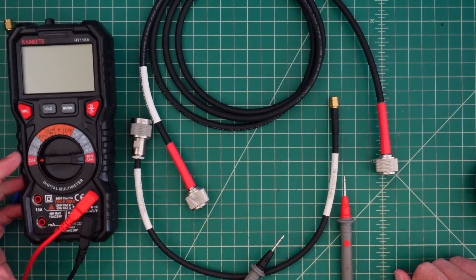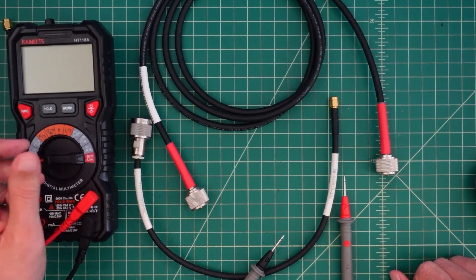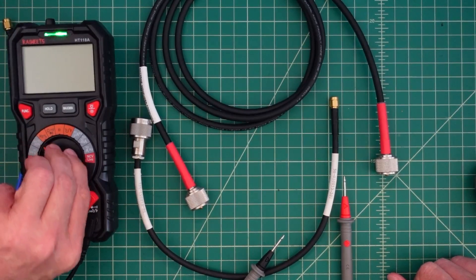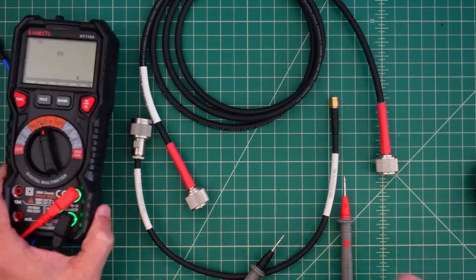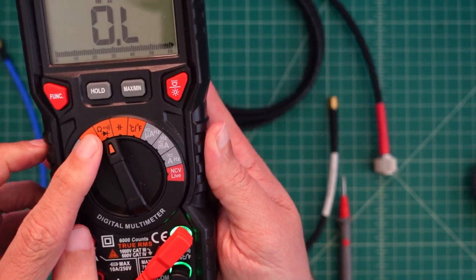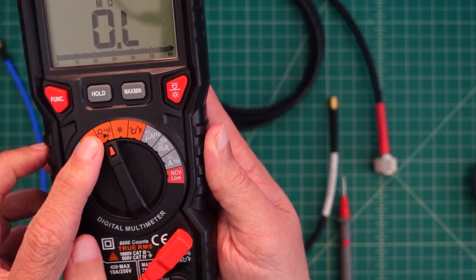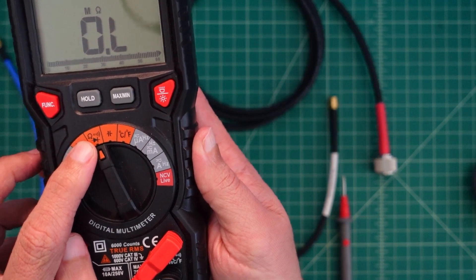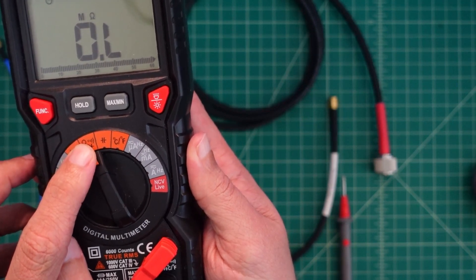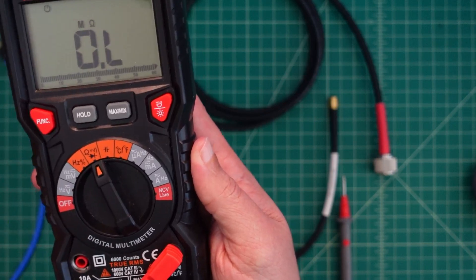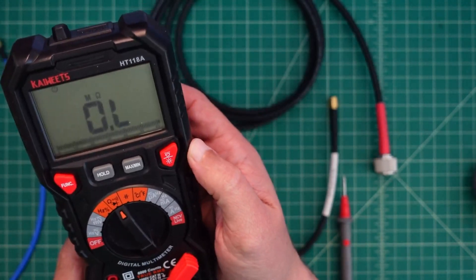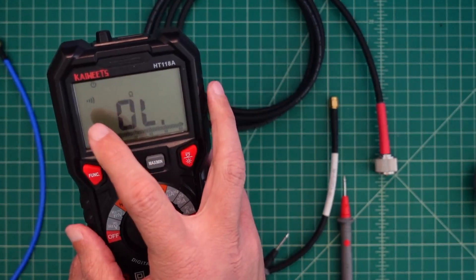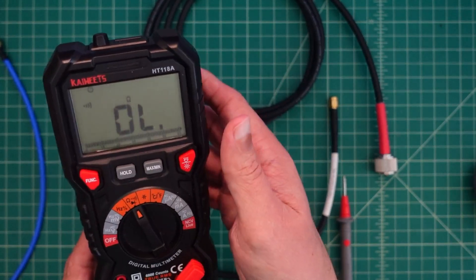So what we have here is a standard multimeter. This is just a Kaiwitz HT118A. I'm going to turn this on. What we're going to do is we're going to set this to resistance measurements. So you can see that we have ohms, so we can measure resistance, diodes. And then we have this little thing here that looks like a speaker output. That allows us to test continuity. What I'm going to do is I'm going to hit my function button. And you can see that we now have that little speaker icon right there.